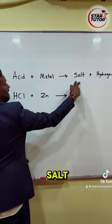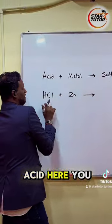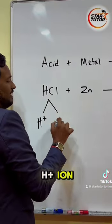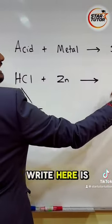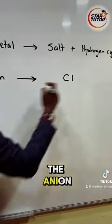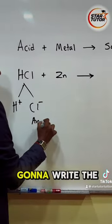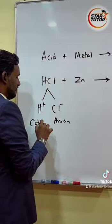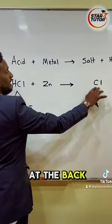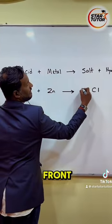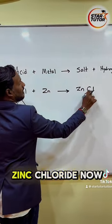How do I get the salt? Very simple. The acid here has two parts: one H plus ion, and another one is the chloride ion. What you are going to write here is just the anion — we are not going to write the cation. So you write the anion at the back and then the metal goes in front. So you get zinc chloride.